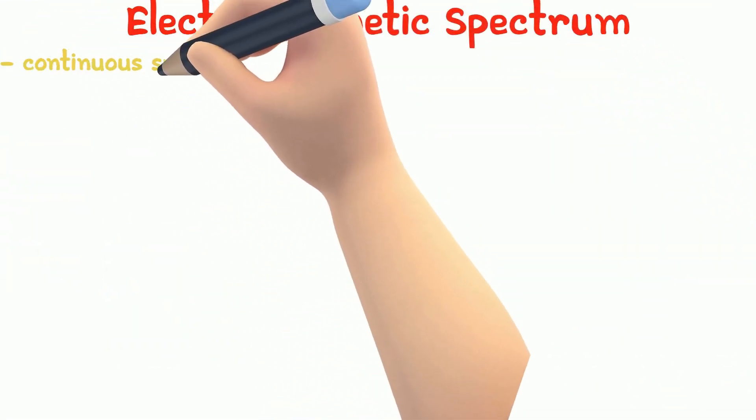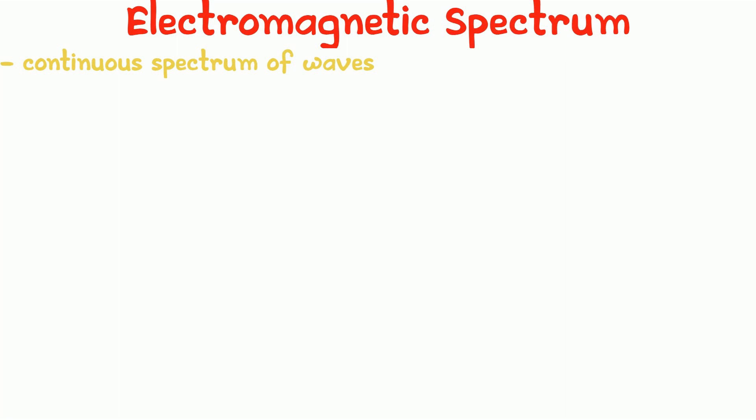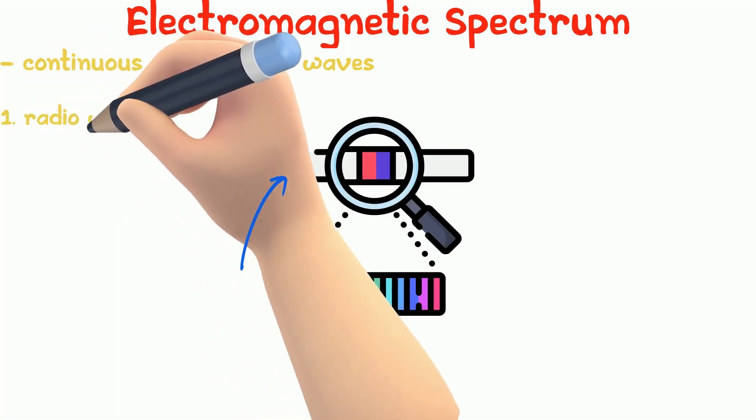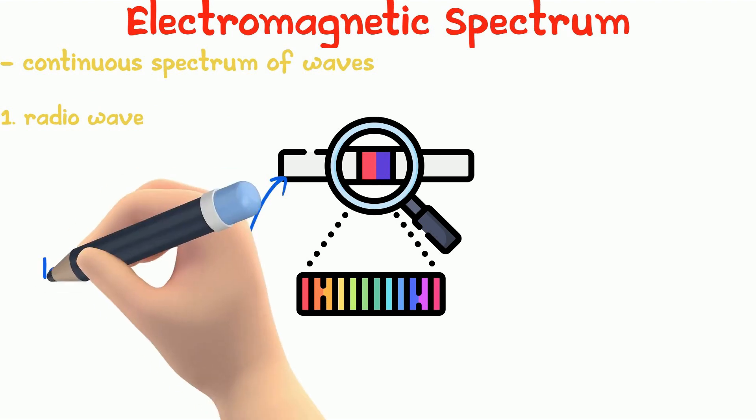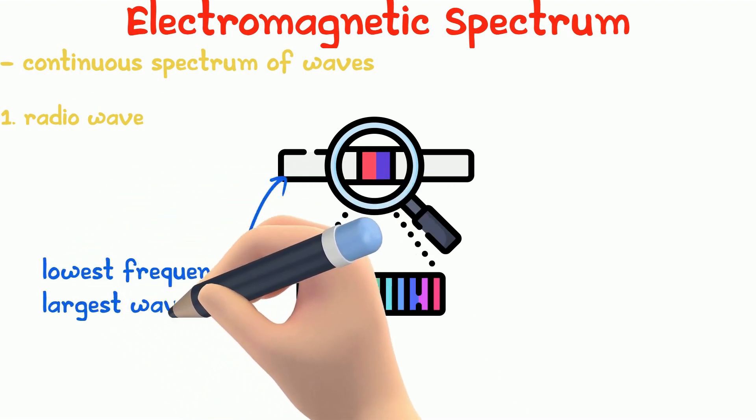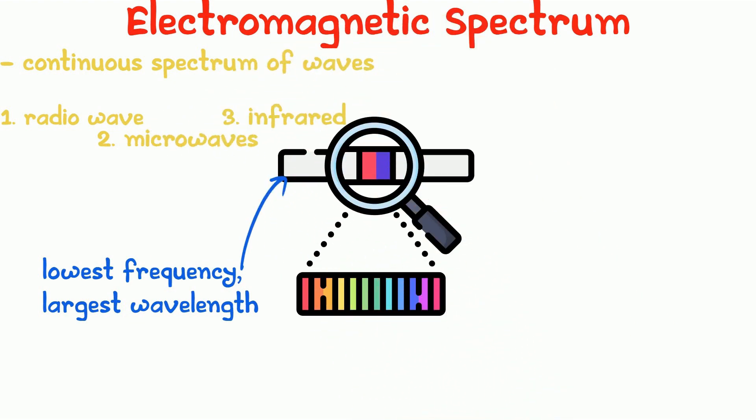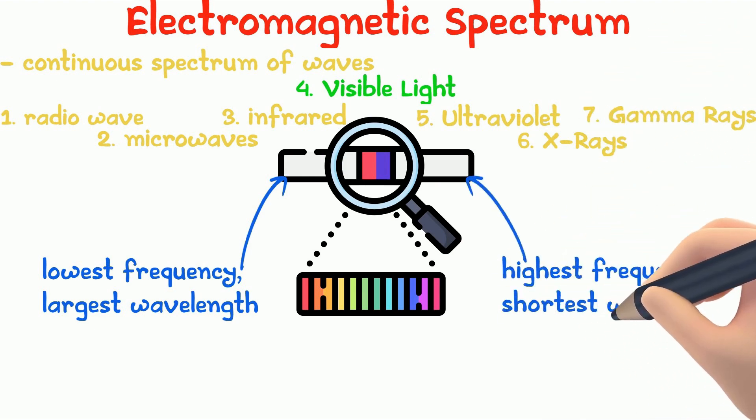The electromagnetic spectrum is a continuous spectrum of waves. So in the electromagnetic spectrum, on the far left is the radio waves. Radio waves have the lowest frequency and the largest wavelength. Next is microwaves and infrared rays, which have a consequently short wavelength and have a high frequency. Next is the visible light and then ultraviolet, x-rays and gamma rays. Gamma rays have the highest frequency and the shortest wavelength.